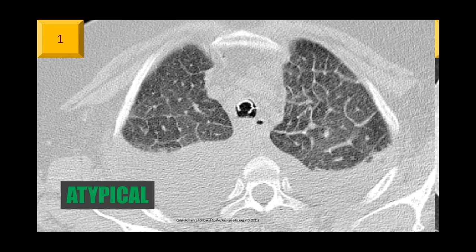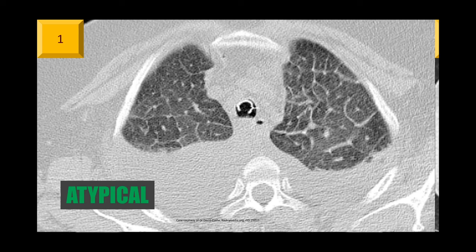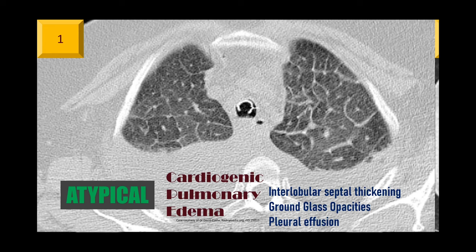we should classify the first patient with atypical findings, because he has cardiogenic pulmonary edema, represented by interlobular septal thickening, minimal ground glass opacities, but he has pleural effusion as well. This is an atypical appearance for COVID-19. In another video, we're going to talk about the recommendations to the reports of COVID-19.